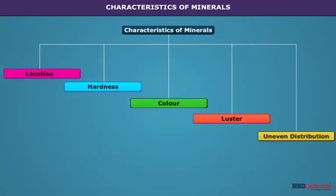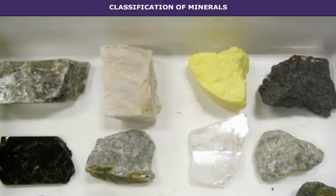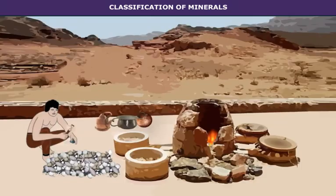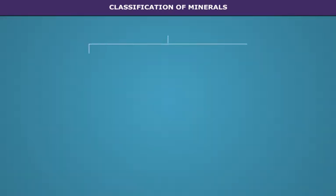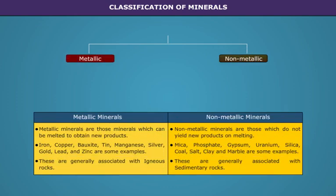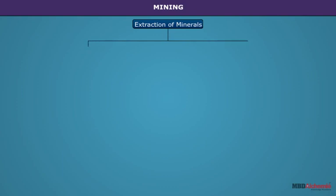Minerals are dispersed and most unevenly distributed; there are great variations between abundant and scanty deposits of minerals. Several criteria are adopted for the classification of minerals. We will use ductility as the basis of classification. Ductility means the ability of a material to be stretched without being weakened. Based on ductility, minerals are classified into metallic and non-metallic. Metallic minerals can be further divided into ferrous and non-ferrous metallic minerals.